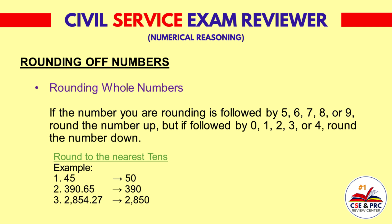Another example. Let's round the following numbers to the nearest tens. Example 1: 523.36 — the result will be 500. Example 2: 6,325 — the result will be 6,300. Example 3: 76,890.13 — the result will be 76,900.